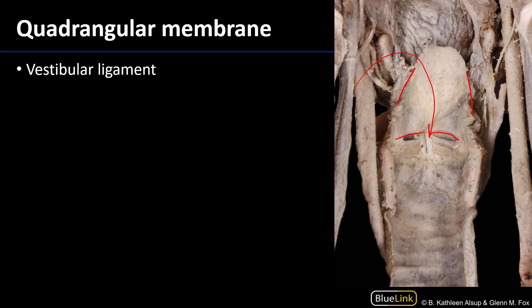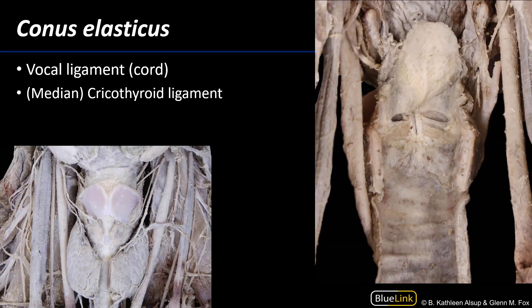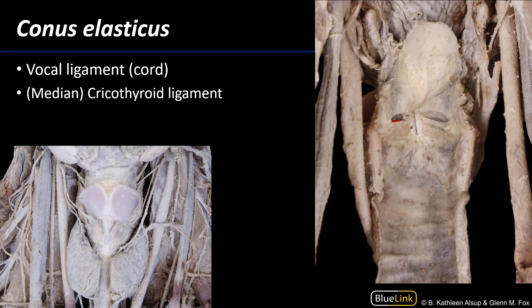The vestibular ligaments are separated from the conus elasticus by the laryngeal ventricle, which is this space here. The conus elasticus is the inferior, or distal, membrane. We can see it running between the vocal process of the arytenoid cartilage and the thyroid cartilage there.